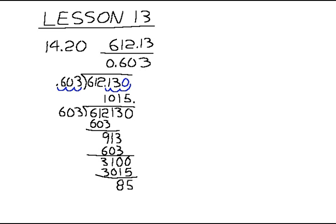Now we need to put a decimal place here and add a zero, so carry a zero down. 603 goes into 850 one time. Put 603 there and subtract — you get 247. Bring another zero down: 2470. 600 times 4 is 2400, so 603 goes into 2470 four times.